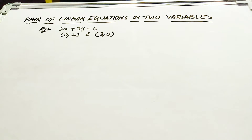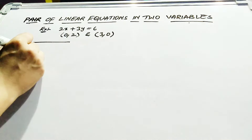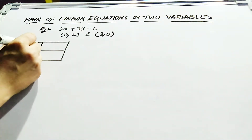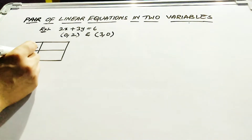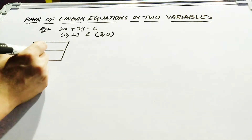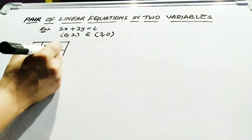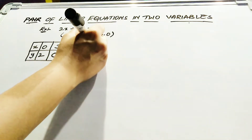Whenever you are using a graph, you need the x and y coordinates. So you should represent your data in a table for better understanding, so that you can easily draw your graph perfectly. When x is 0, y is 2; when x is 3, y is 0. Just plot this table graphically.